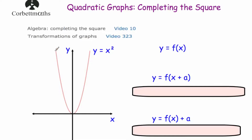Here we have the graph y equals x squared - a u-shaped parabola that goes through the origin, because 0 squared is 0. From transformations of graphs, if y equals x squared is f(x), then adding a number inside the brackets - y equals f(x + 2) - shifts the graph two squares to the left. So instead of having a turning point at the origin, it would have a turning point at minus 2, 0.